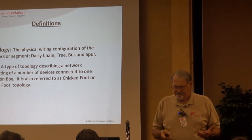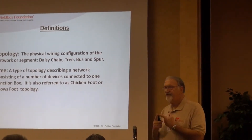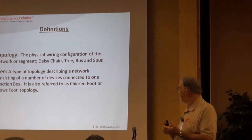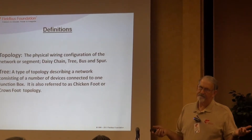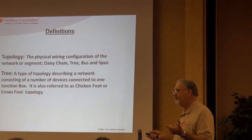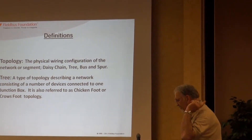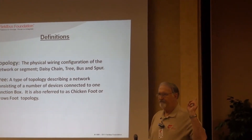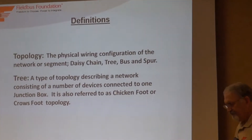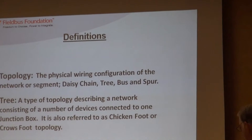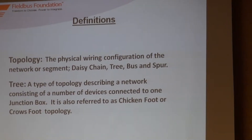Topologies - there are four basic kinds and a couple of variations: daisy chain, tree, bus with spurs, and you can actually have point-to-point if you so desire. Tree is the one we normally wind up using, and it's very similar to the 4-20mA world where you run an equivalent of a home run - this being the trunk - out to the field, to a device coupler or junction box, and then spread out from there. You can also call it chicken foot or crow's foot.